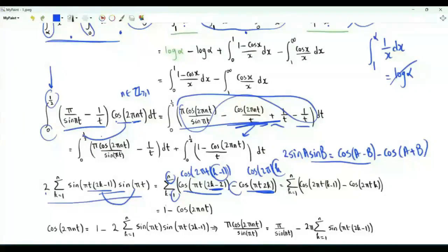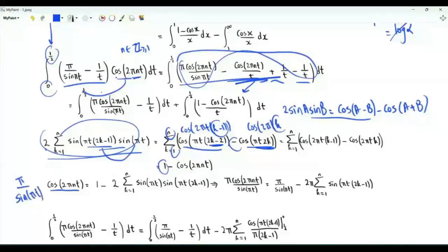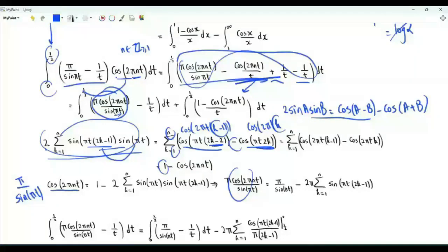From the telescoping sum, we get cosine zero, which is one, minus cosine 2πnt. So cosine 2πnt equals one minus this part. Multiplying both sides by π over sin(πt), we get π cos(2πnt) over sin(πt) = π over sin(πt) minus 2π times the summation k from one to n of sin(π t (2k−1)).